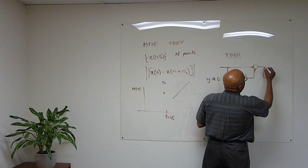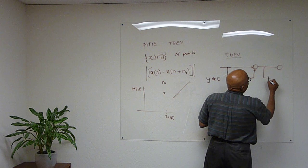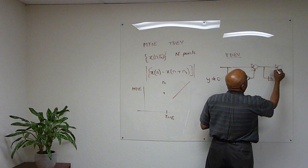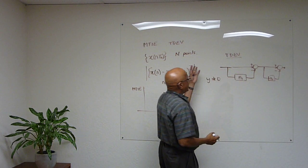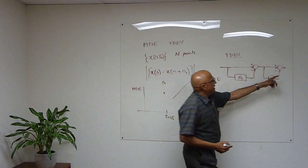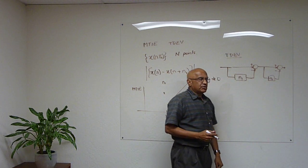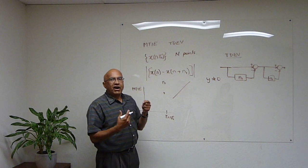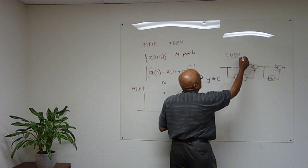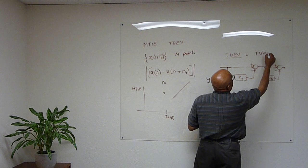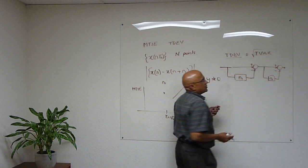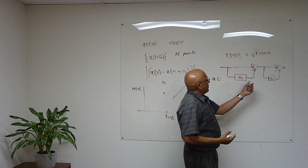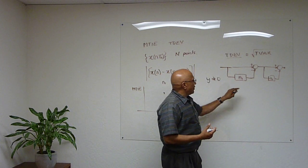And actually, you take the second difference. There is a rationale for why you take the second difference. So you have taken a second difference now, and what you are going to look at is the power of this output. And that, in a sense, is related to the TDEV, or TVAR sometimes as it is referred to.